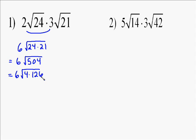Then we look at 126, we try 4. 4 doesn't go into 126, but 9 does, which is our next perfect square. So we have 4 times 9, and 9 goes into 126, 14 times.